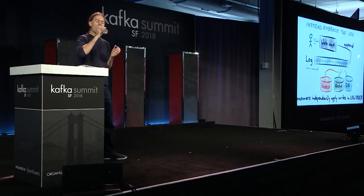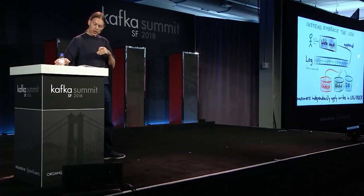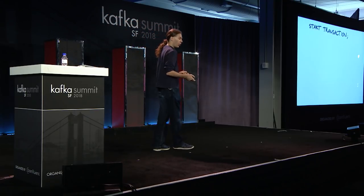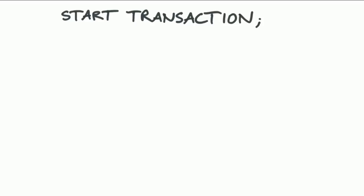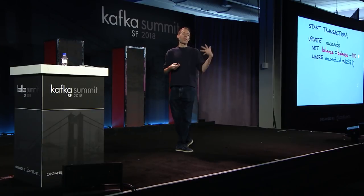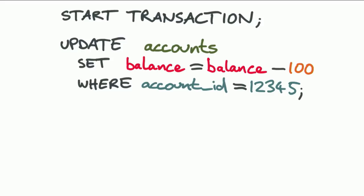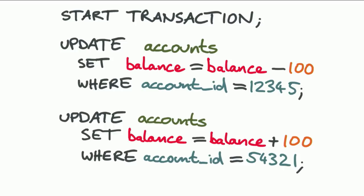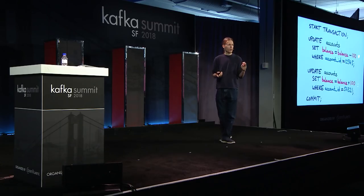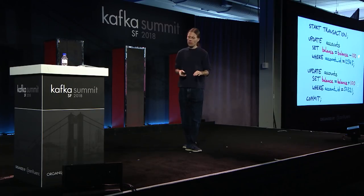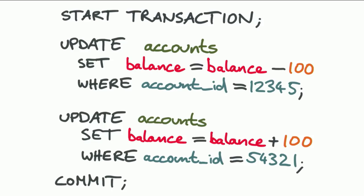Let me show you another example of atomicity — the standard textbook example: transferring money from one bank account to another. In a relational database, you would start a transaction, update the balance of the source account reducing it by $100, update the balance of the destination account increasing it by $100, then commit. It's really important these two updates happen atomically — either both happen or neither — because if only one happens, you either have money disappearing into the ether or money being created out of thin air, both of which are generally considered a bad idea in financial systems.